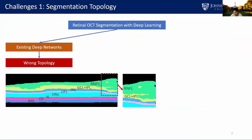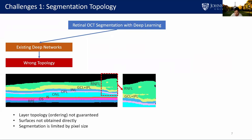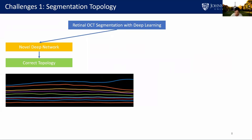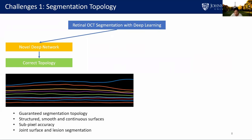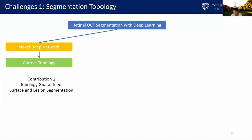The most intuitive way for retinal layer segmentation is applying an existing deep network like UNET to label each pixel into background, layers, or lesions. However, this widely used pixel-wise labeling scheme cannot guarantee the layer ordering — some pixels belonging to RNFL may be labeled as GCL plus IPL, resulting in wrong topology. Meanwhile, retinal surfaces are not explicitly obtained and segmentation accuracy is limited by pixel size. Our first contribution is a novel end-to-end deep learning framework that guarantees correct segmentation topology, outputs smooth continuous surfaces with sub-pixel accuracy, and performs joint surface and lesion segmentation.